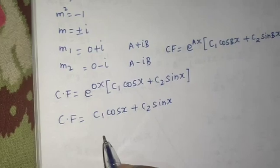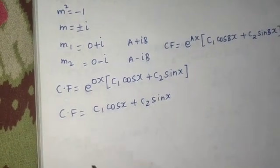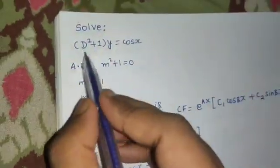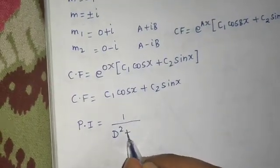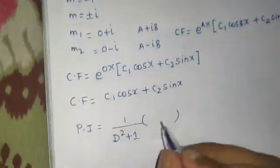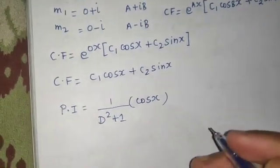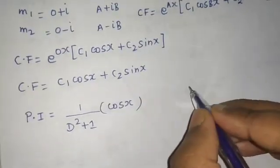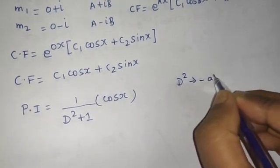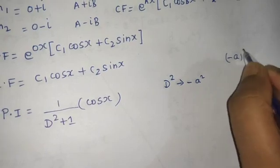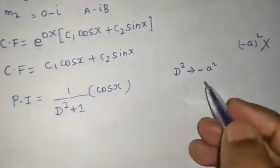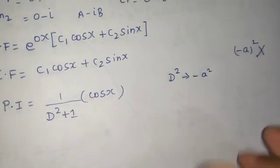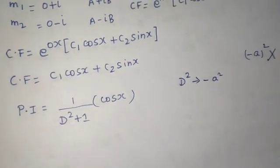Now moving to the third step: find the particular integral. The general format is 1 over f(D), where f(D) here is D squared plus 1, operating on the RHS which is cos(x). The rule is: when the RHS is cos(x) or sin(x), replace D squared by minus of a squared — not by minus of a whole square, that would be incorrect. If the denominator becomes zero after substitution, multiply by x outside the operator, differentiate the denominator, and apply the rule again.